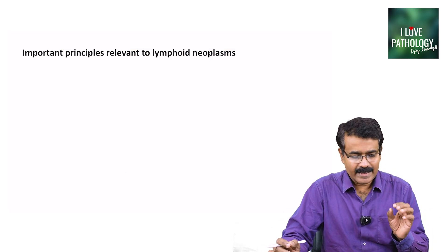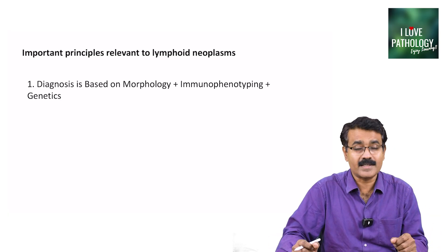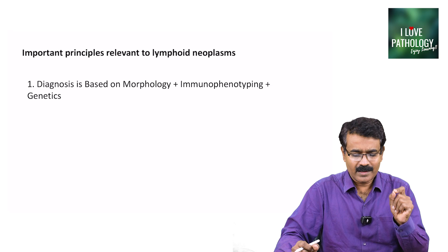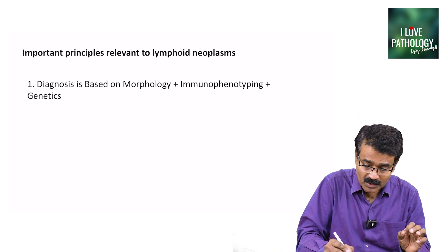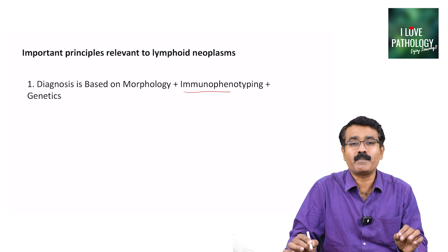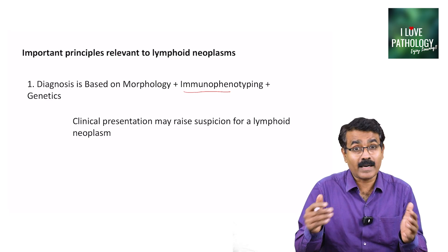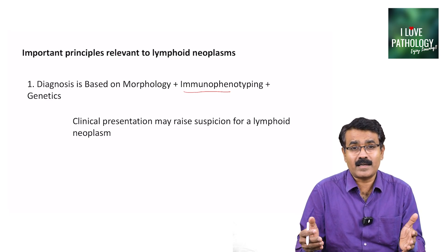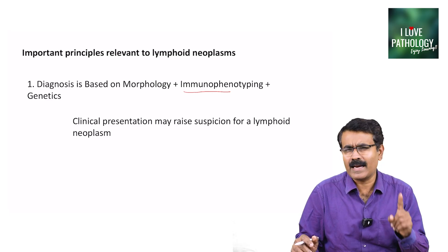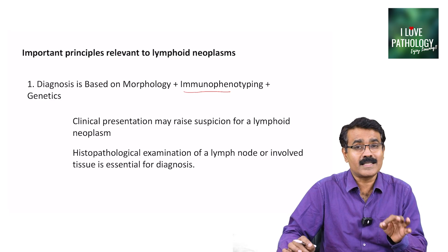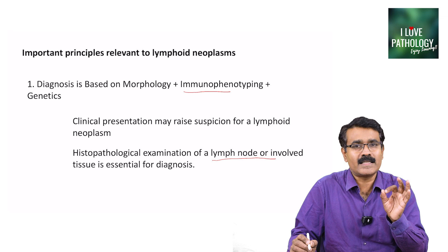Now let us understand the important principles relevant to lymphoid neoplasms. The first important principle is that the diagnosis of lymphoid neoplasms is based not just on morphology — it is based on morphology plus immunophenotyping and genetics. Clinical presentation may help in suspecting a lymphoid neoplasm, but the diagnosis is always based on morphology, immunophenotyping, and genetics. Histopathological examination is mandatory, especially when you are seeing lymph node involvement or involved tissue.